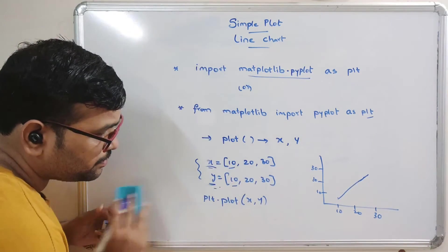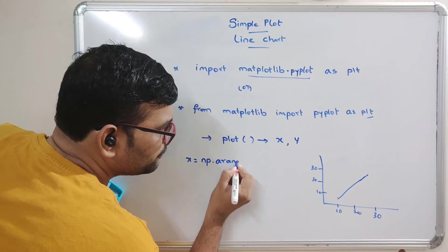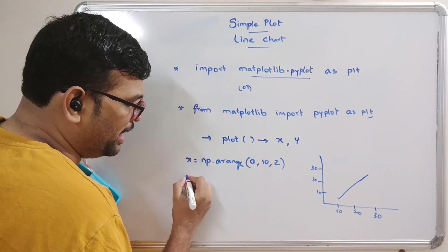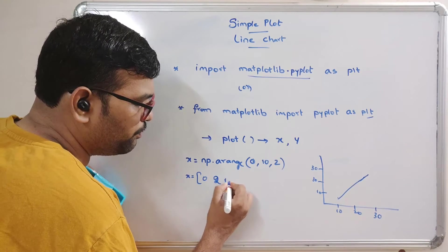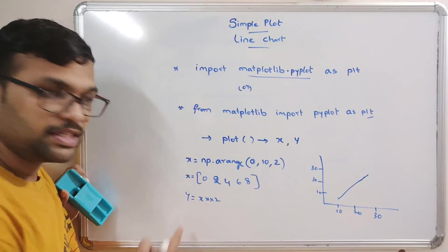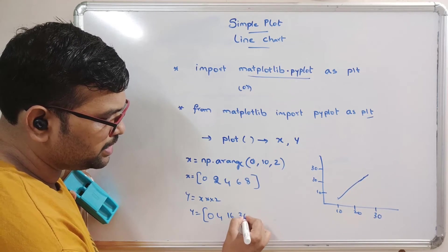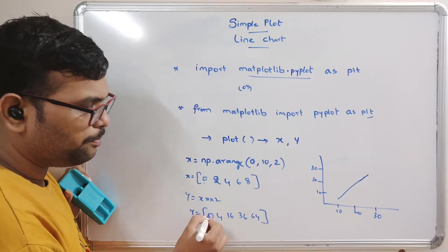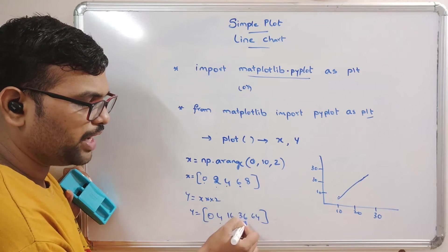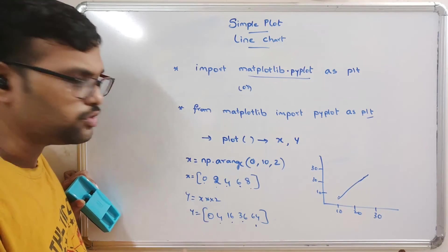In numpy we have the arange function. For example, x = np.arange(0, 10, 2) gives x values 0, 2, 4, 6, 8. If y = x**2, then y holds 0, 4, 16, 36, 64. So the points are (0,0), (2,4), (4,16), (6,36), (8,64) — and like this a line will be plotted.